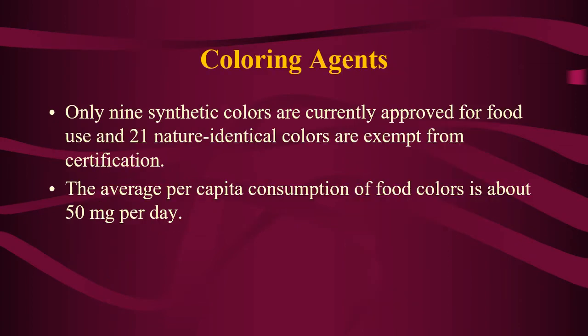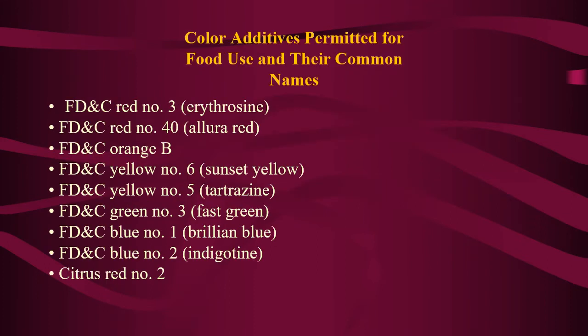Coloring agents are obtained from either synthetic or natural sources. Only nine synthetic colors are currently approved for food use, and 21 natural identical colors are exempt from certification. The average per capita consumption of food coloring is about 50 milligrams per day, which is quite a lot. The nine approved synthetic colors are: erythrosine, allura red, orange B, sunset yellow, tartrazine, fast green, brilliant blue, indigotine, and citrus red No. 2.